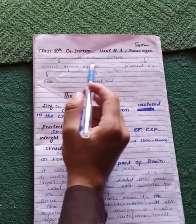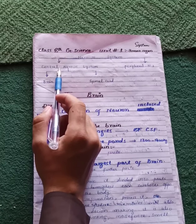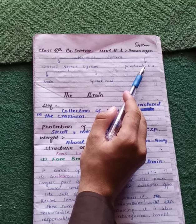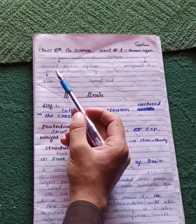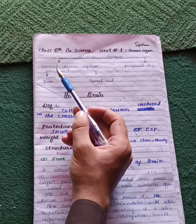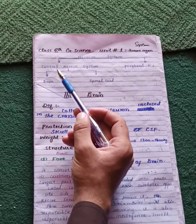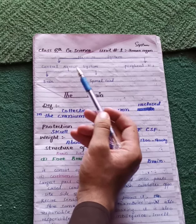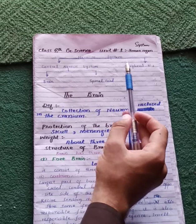The nervous system is divided into two parts: the Central Nervous System and the Peripheral Nervous System. The central nervous system is at the center of the body (the axis), while the peripheral nervous system is spread around the periphery of the body.